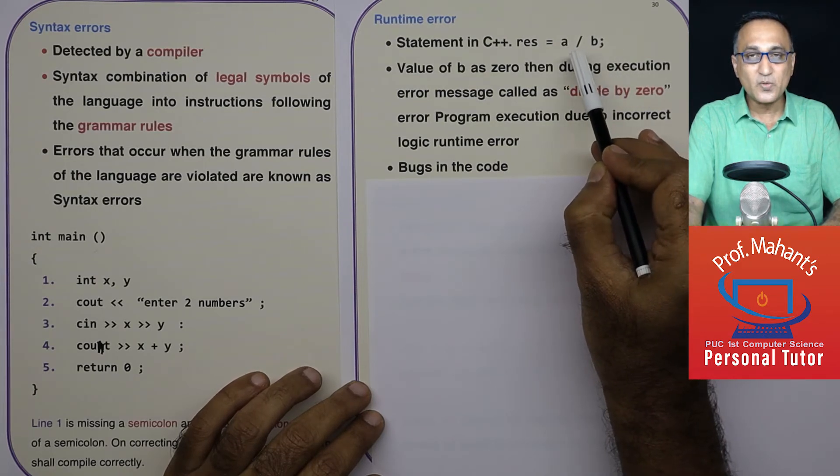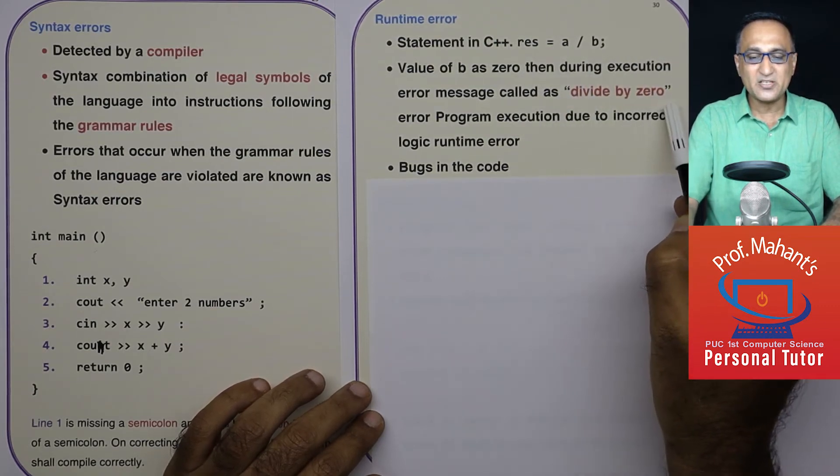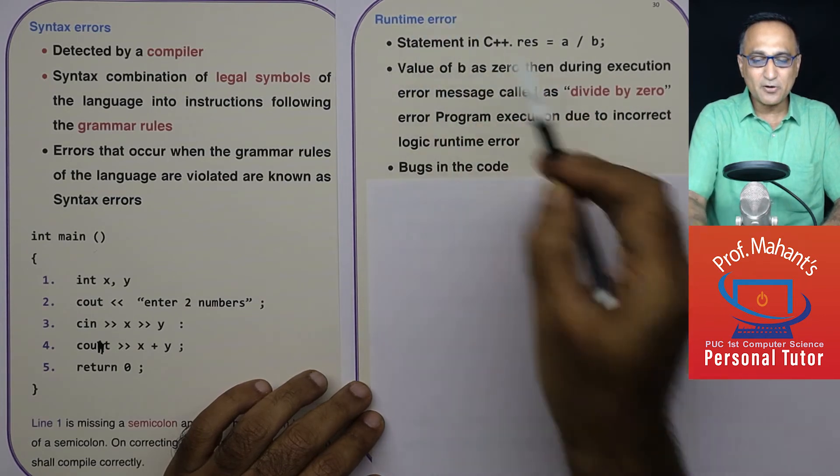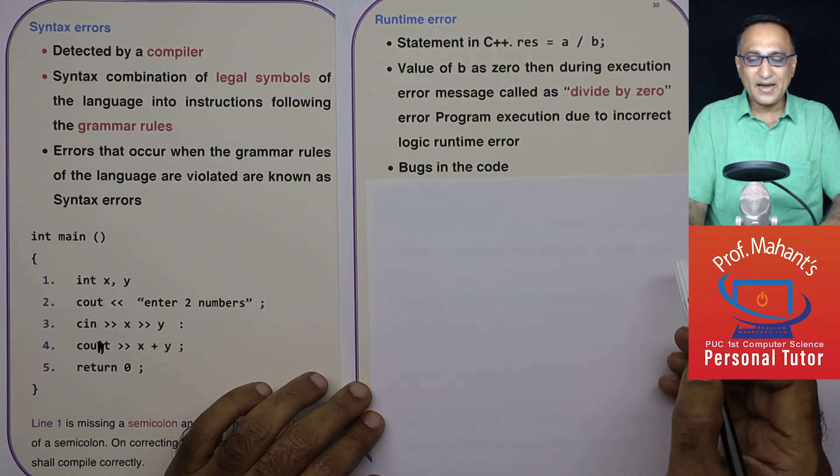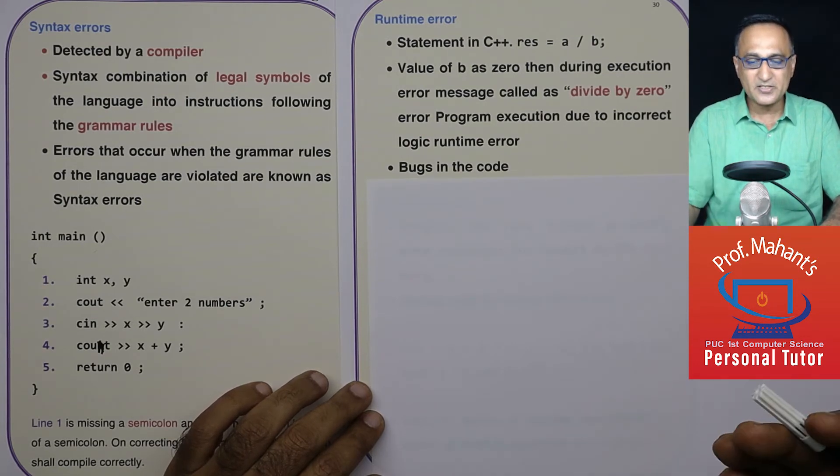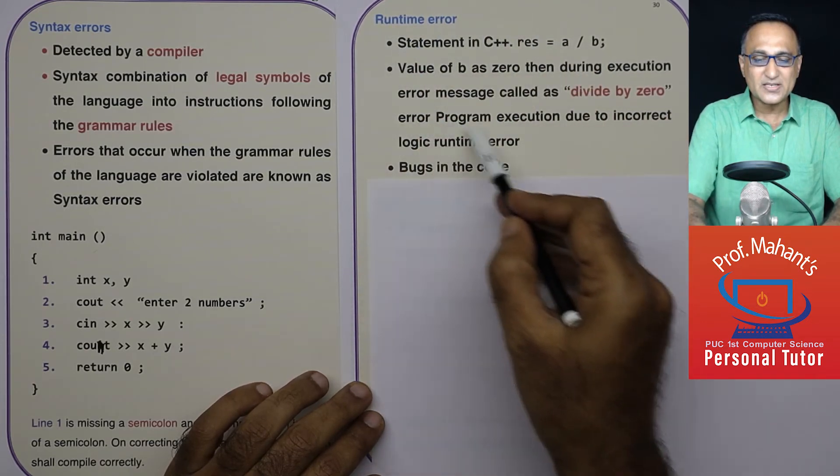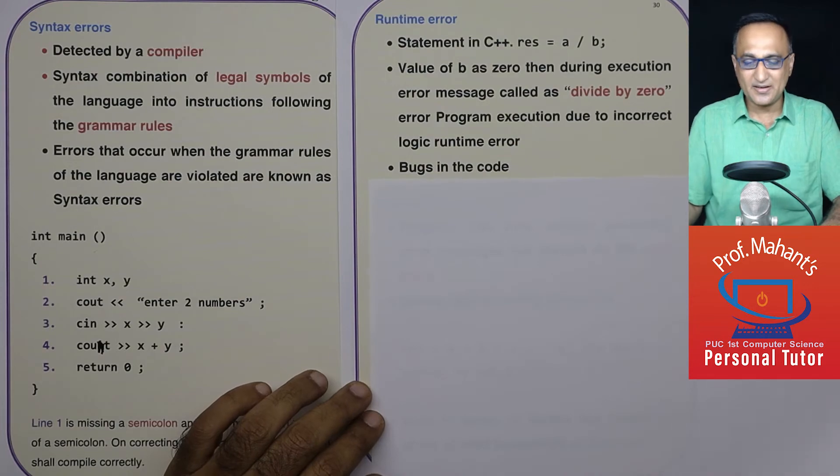So what is going to happen? You cannot divide a number which is not zero by zero. You're going to get something called a divide by zero error. This is an example of a runtime error. And the program will halt, it will not continue to proceed because it does not know the answer to 100 by zero. So this is an example of a bug in code. And this kind of error is known as a runtime error, which has to be corrected.